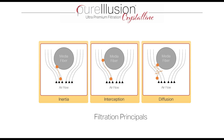When we look at particles even smaller than this, we're talking about the diffusion principle. When a particle is very small — 0.1 microns, 0.01 microns, 0.003 microns — they begin to act in a very counterintuitive way. They become erratic, jutting here and there, bouncing off molecules in the air. The smaller the particle gets, the greater its freedom of motion. And with greater freedom of motion, the more likely it is to encounter a media fiber in the HEPA filter. Thus, for the diffusion principle, as particles get smaller, the efficiency of filtration gets larger.